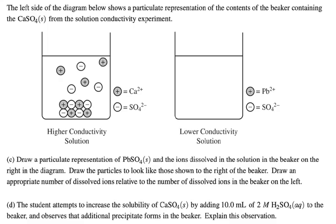The left side of the diagram below shows a particulate representation of the contents of the beaker containing the calcium sulfate solid from the solution conductivity experiment. Now, draw a particulate representation of the lead sulfate and the ions dissolved in the solution in the beaker on the right in the diagram. Draw the particles that look like those shown on the right of the beaker. Draw an appropriate number of dissolved ions relative to the number of dissolved ions in the beaker on the left.